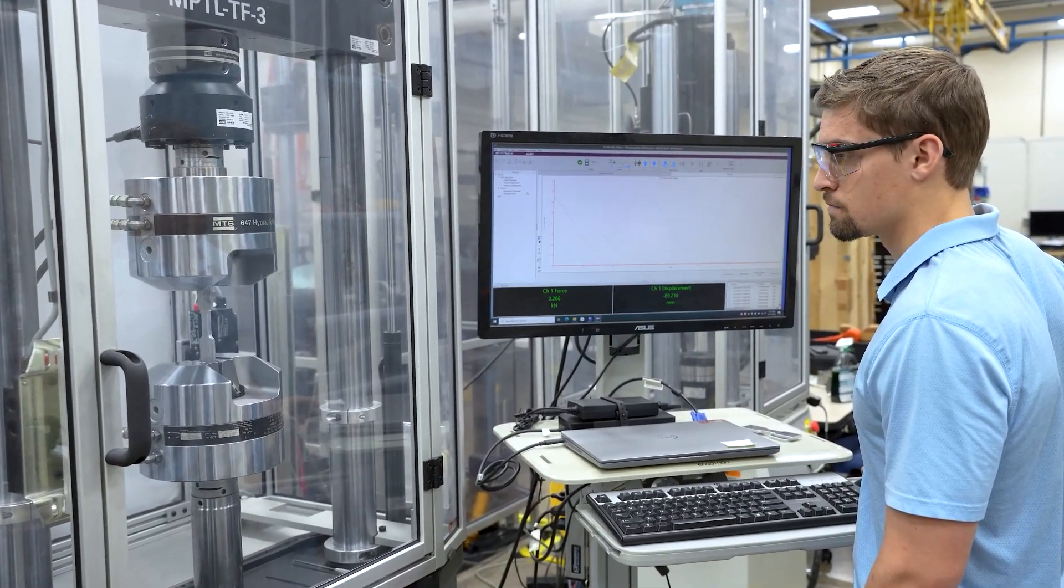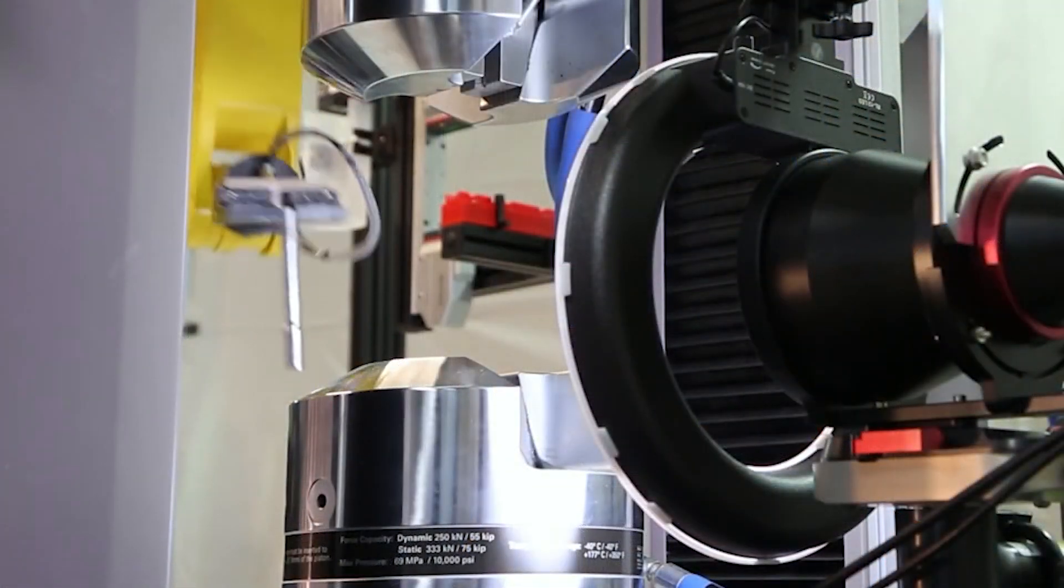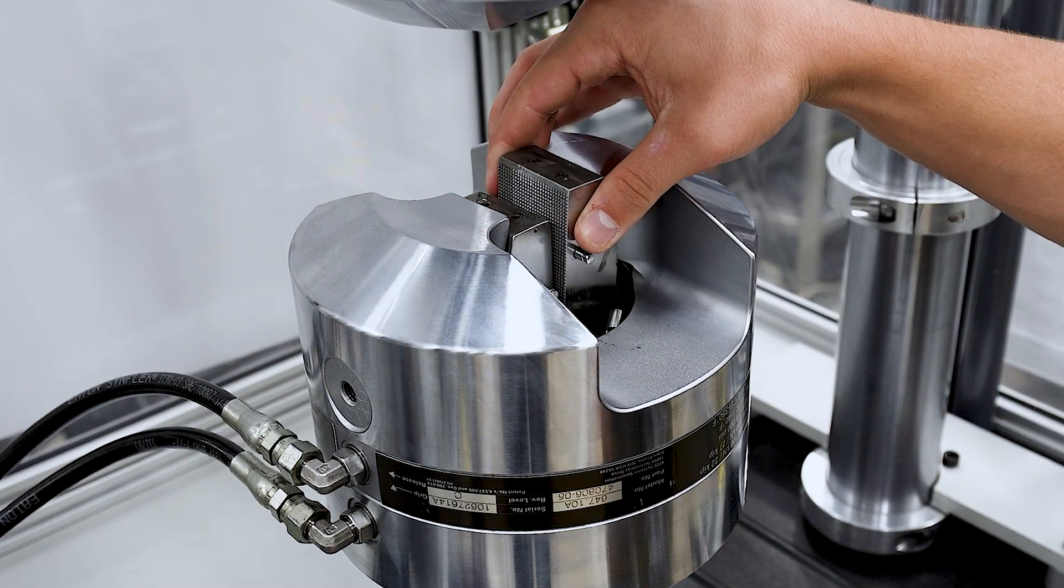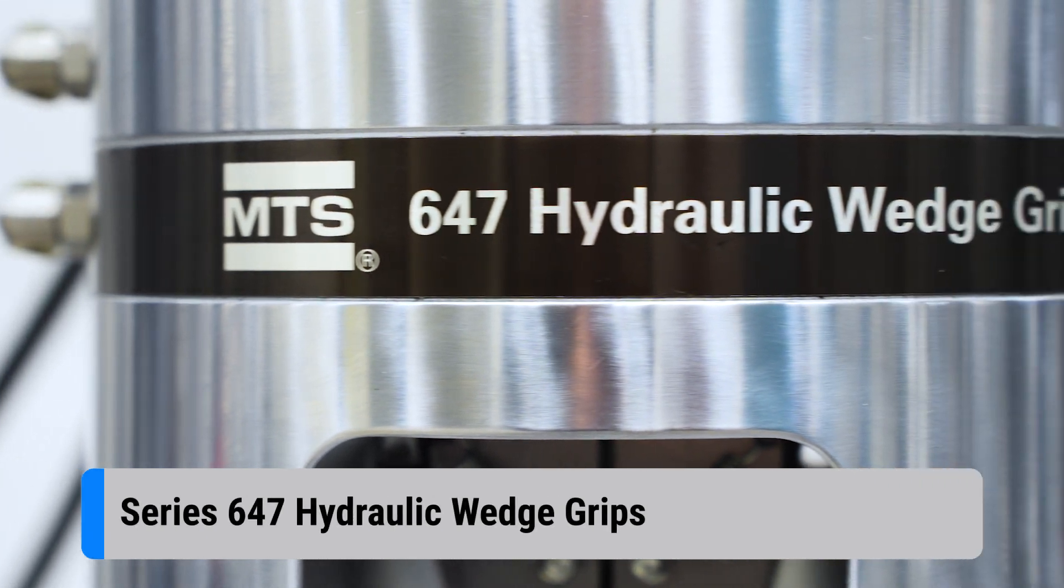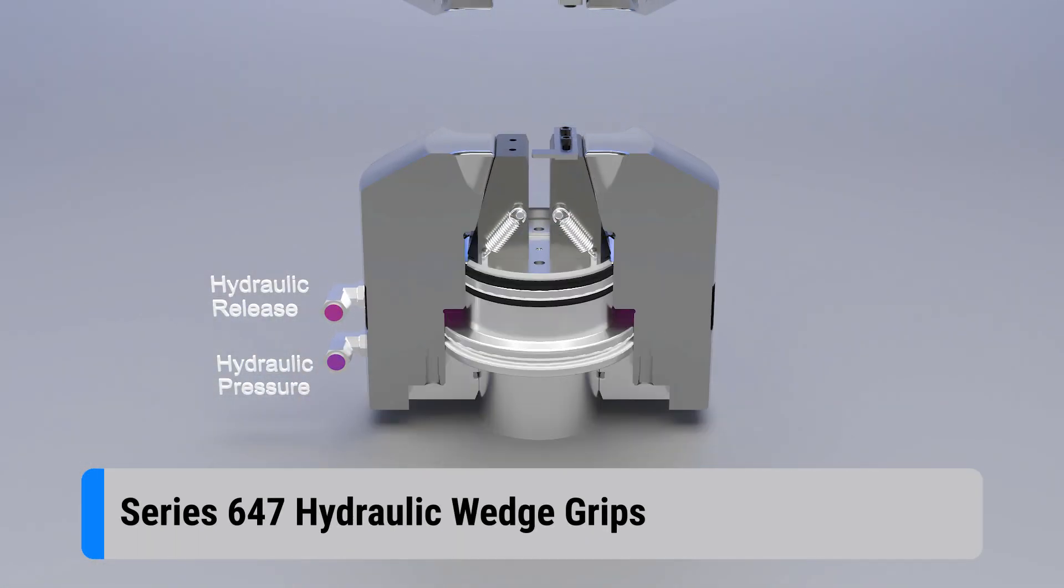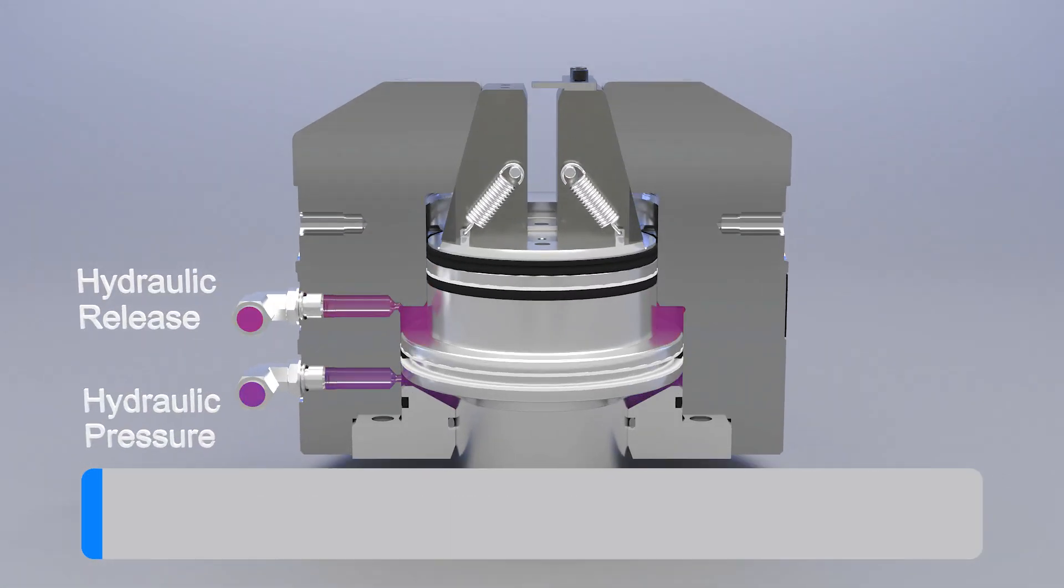Maintain confidence in your test data, even if you need to run many tests in a short period of time or change test setups quickly. MTS Series 647 hydraulic wedge grips are a great choice for fast repeatable testing.